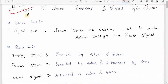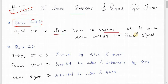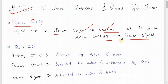Hello friends, welcome back to the Great Short Trick series. Today we are going to see the trick to solve energy and power signal based sums. The very basic rule you should know is that a signal can be either a power signal or an energy signal, or it can be neither energy nor power signal - but it cannot be both power and energy signal at the same time.